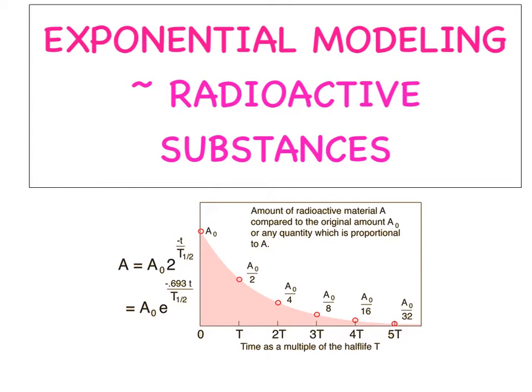And what this is going to really be based off is this idea of half-lives. And the way that a half-life works, as described here, it says the amount of radioactive material A compared to the original amount A sub 0, or any quantity which is proportional to A. Basically, we have some initial amount. Maybe we'll say there's 100 grams of some substance. Well, depending on what its half-life is, you're then going to drop to 50 grams and then 25 grams and then 12.5 grams, where the amount of that radioactive substance keeps getting cut in half over a certain amount of time, depending on what the half-life is for that substance.